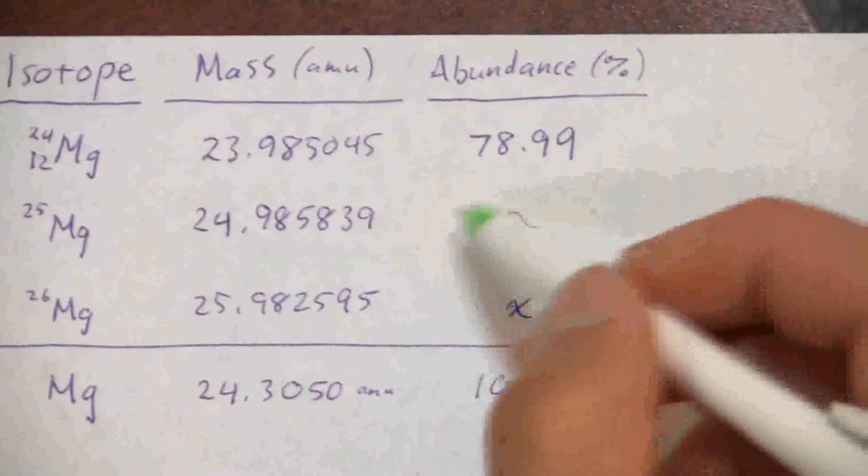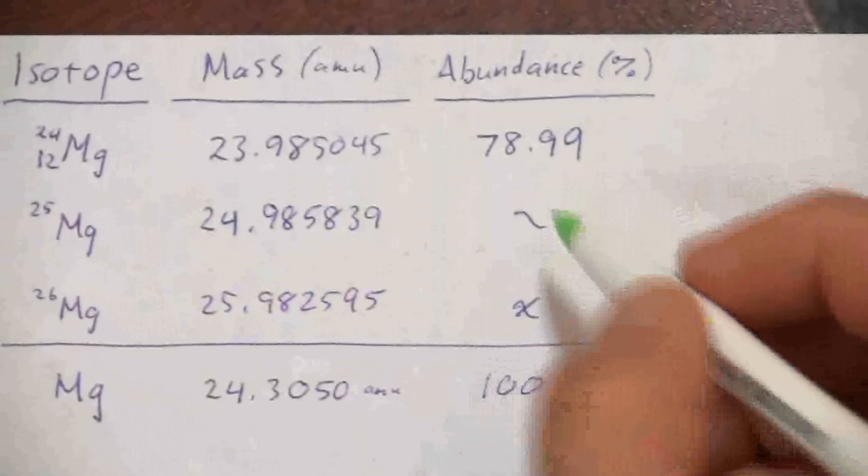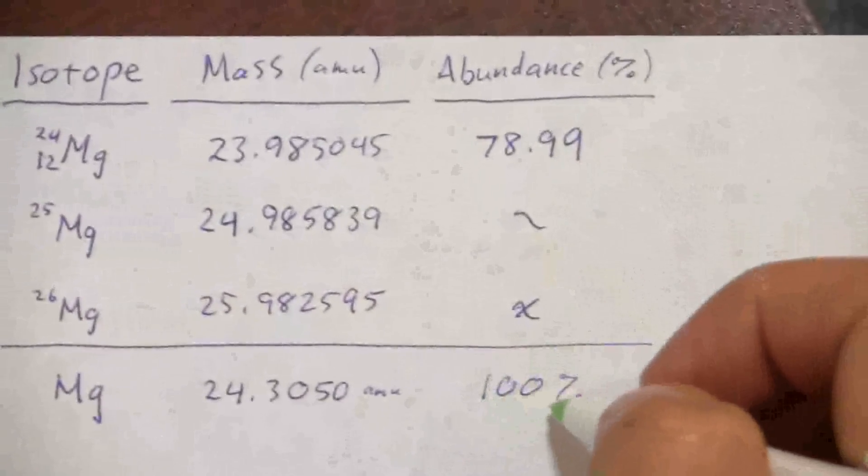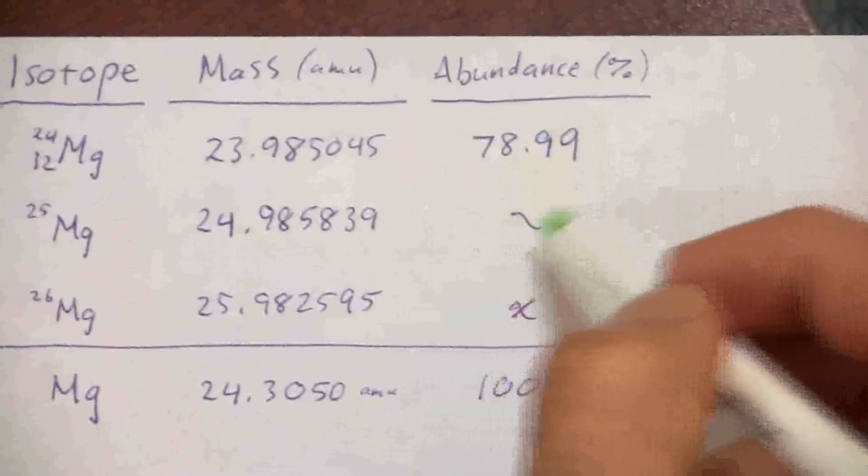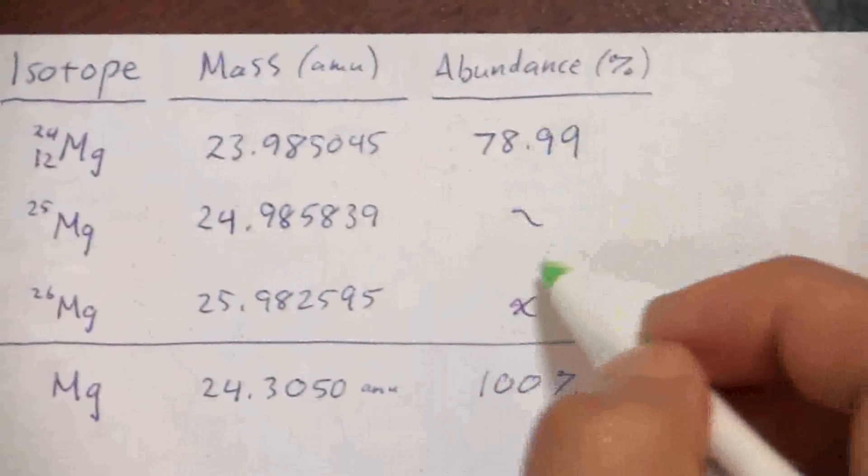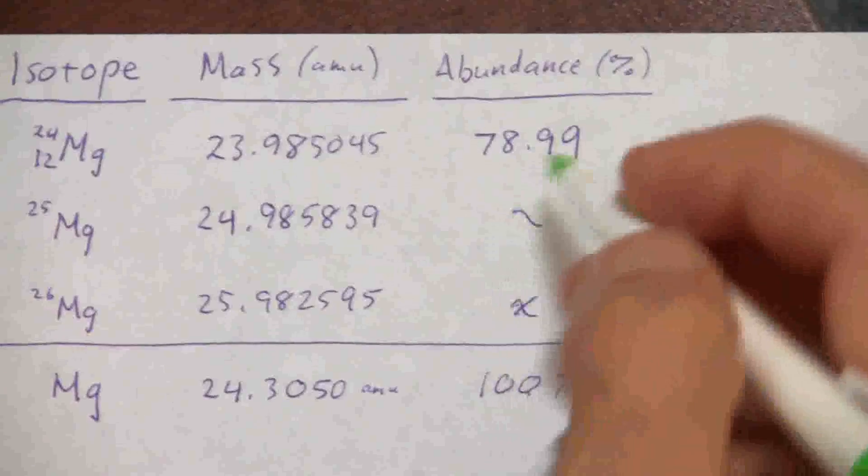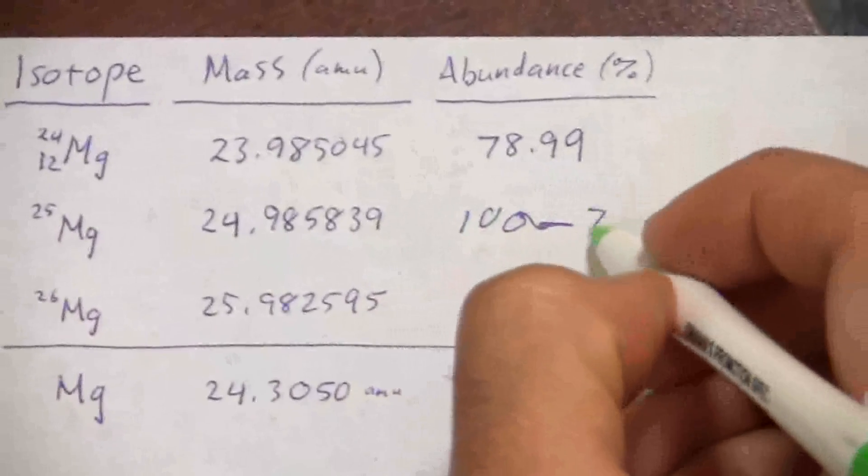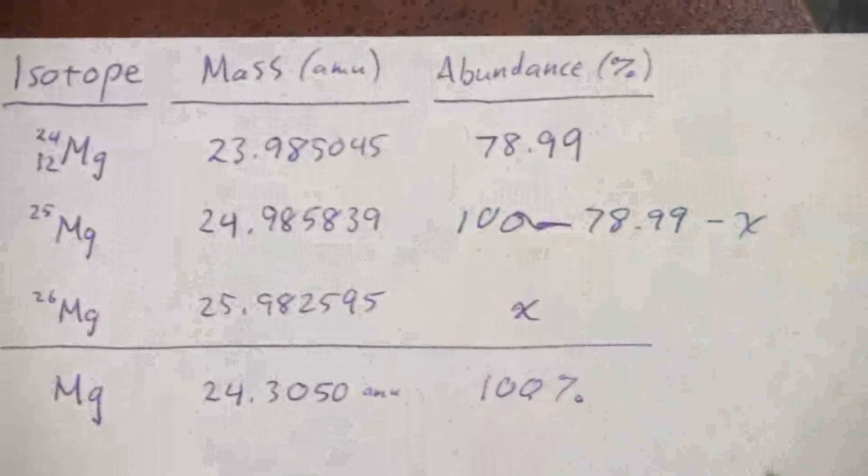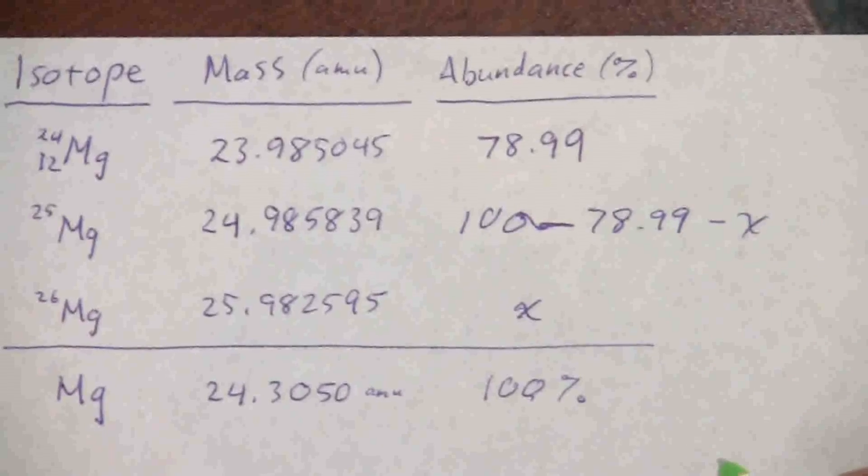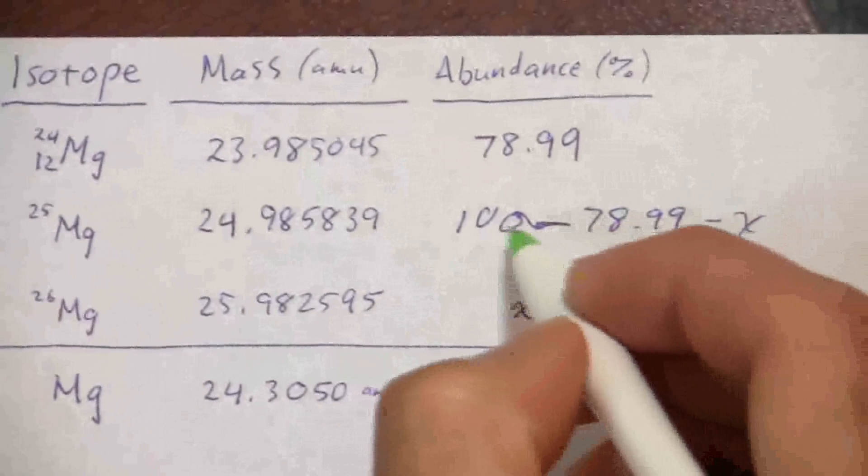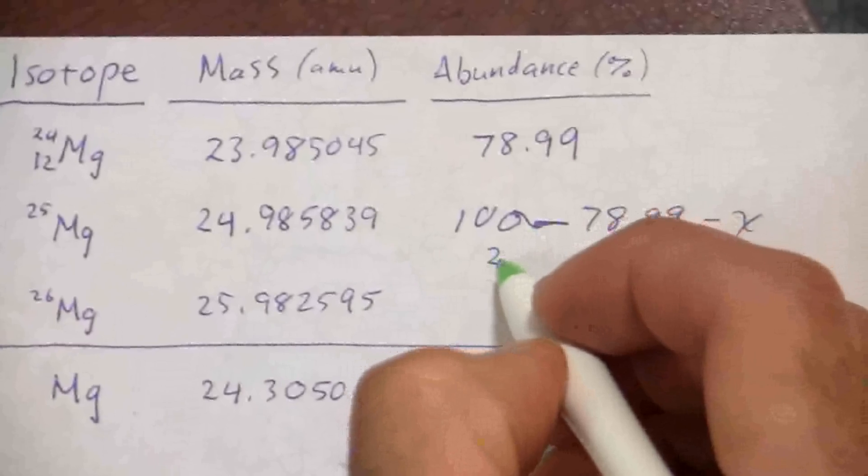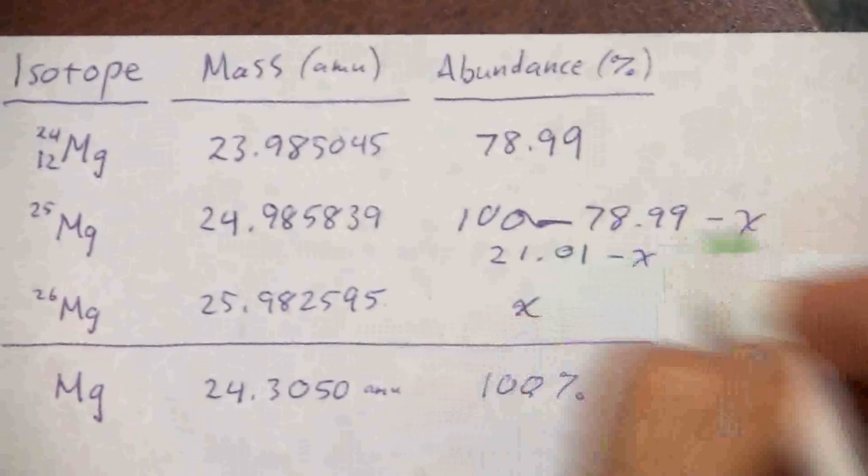So then my abundance for this middle isotope is going to be what? I know it adds up to a total of 100%, so whatever this is, plus this plus that equals 100%. Or I can say this is 100 minus 78.99 minus x. Or I can say, if I subtract this, I'll get 21.01 minus x.